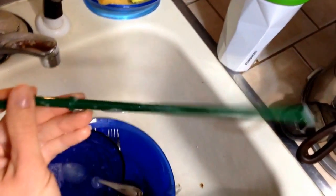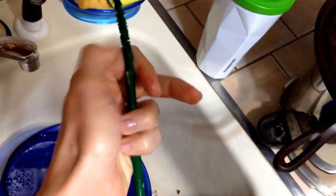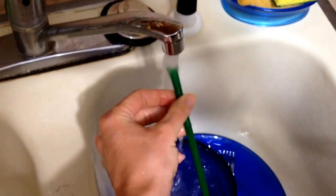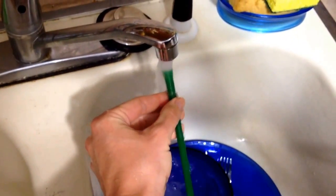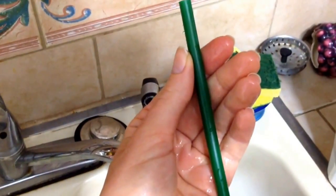Once you're finished cleaning the inside with the pipe cleaner, just kind of scrub it in and out. Then just wash it with water. Nice clean straw.